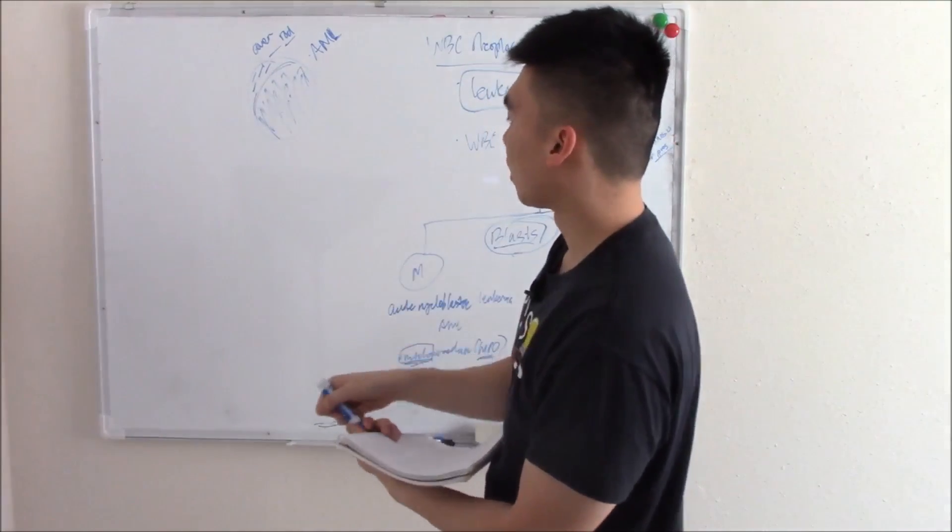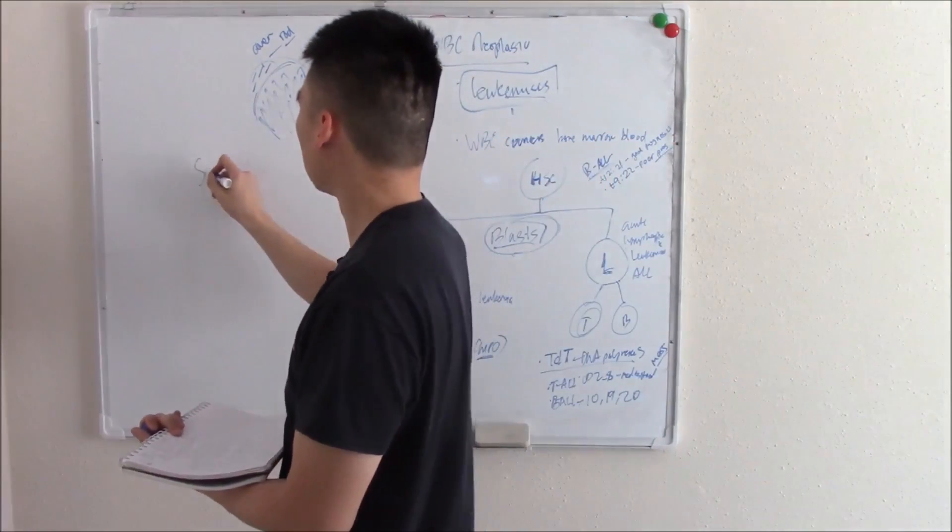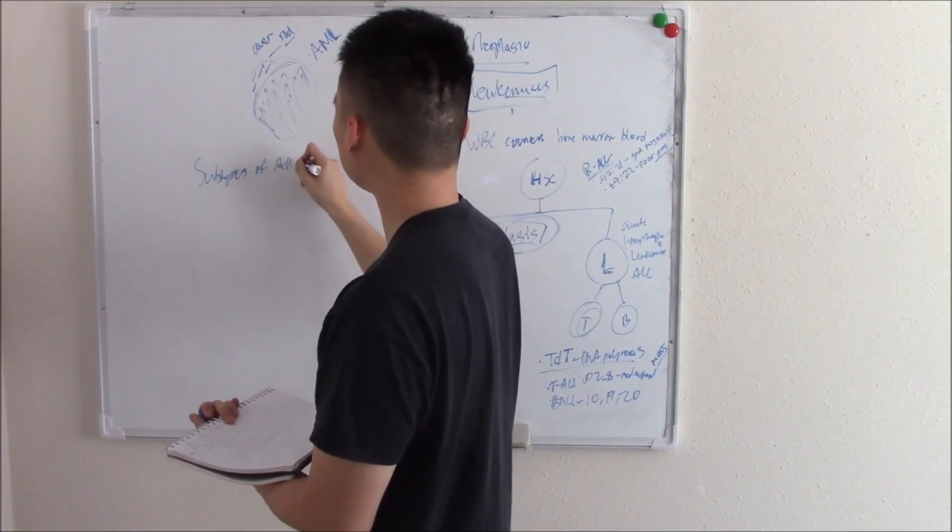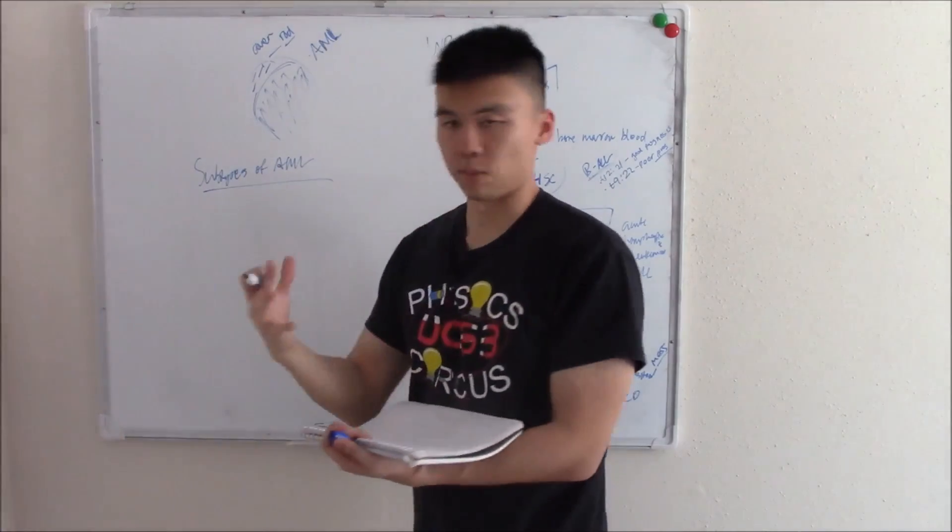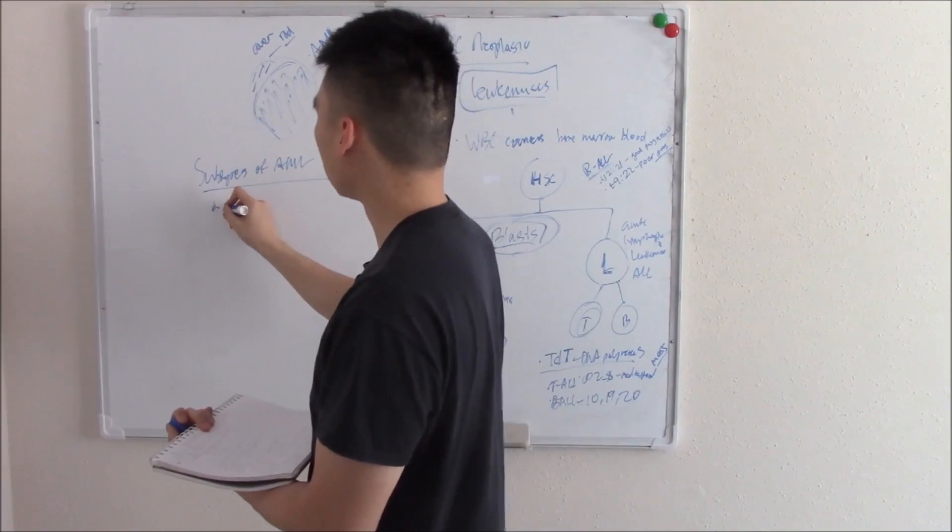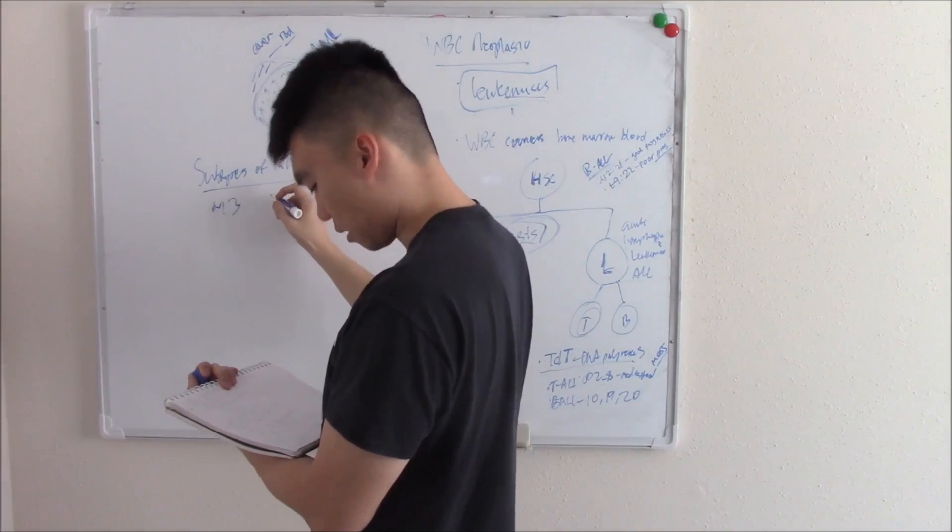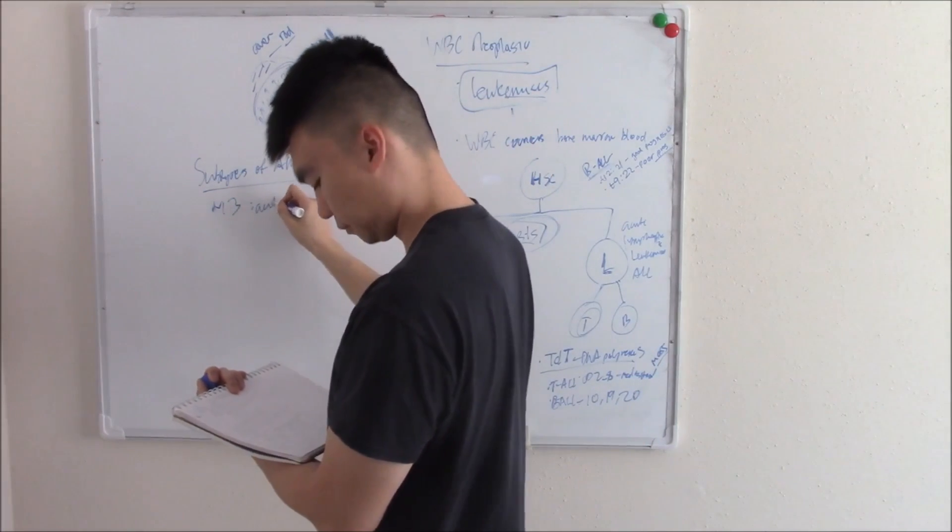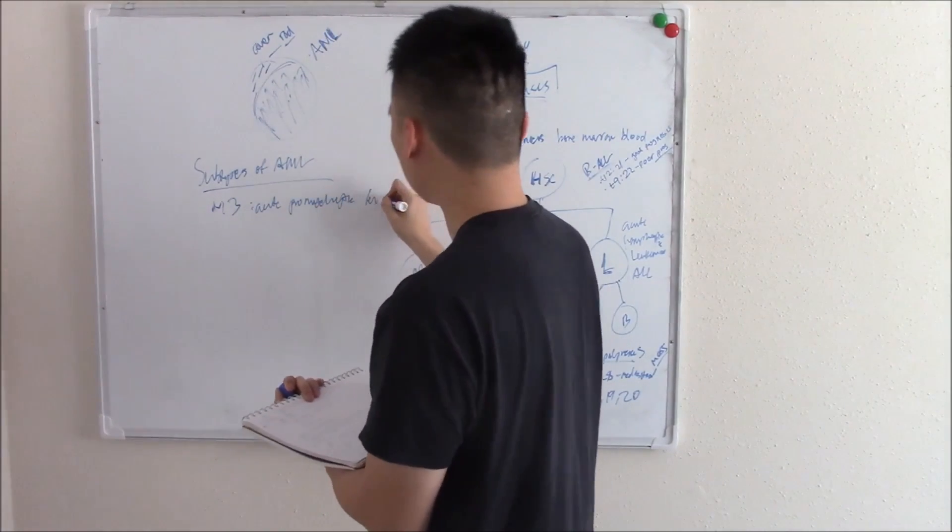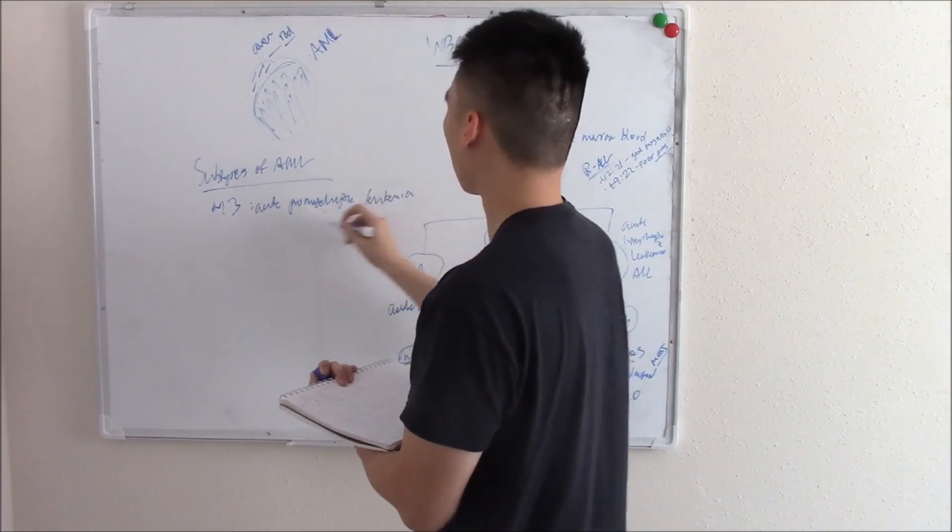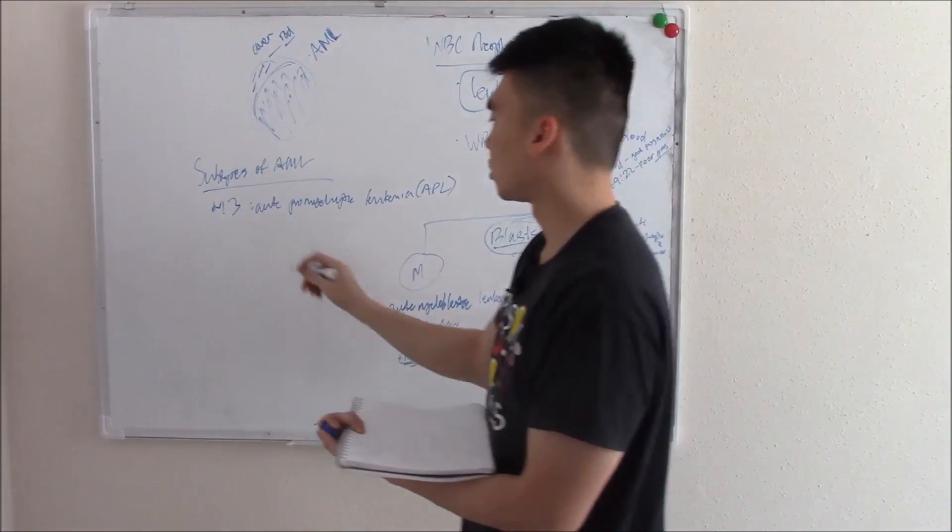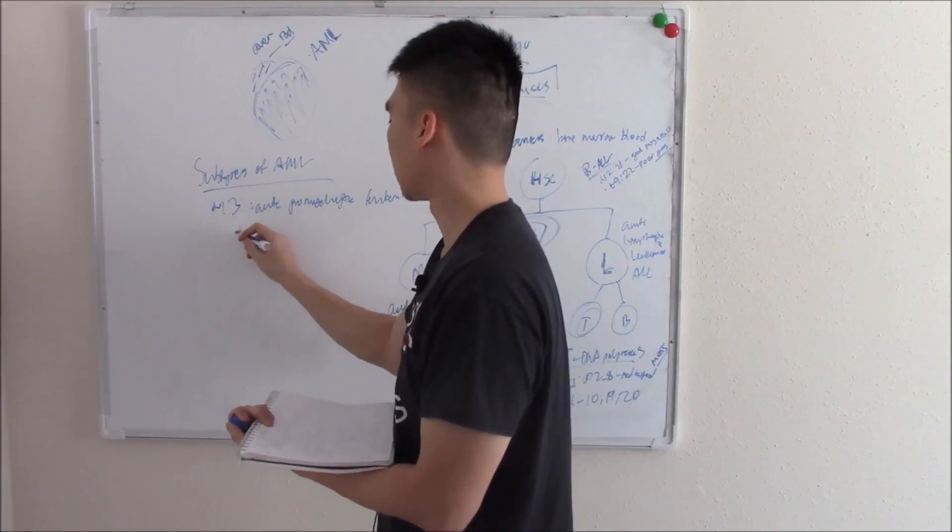You should also be aware that AML has a few subtypes. We can call these AML subtypes M1, M2, M3, M4, M5. One of the main ones is M3, also known as acute promyelocytic leukemia. This is the most famous subtype. It's famous because it's due to a chromosomal abnormality.